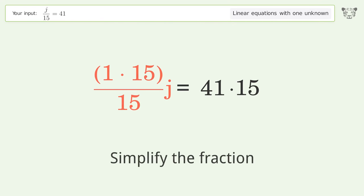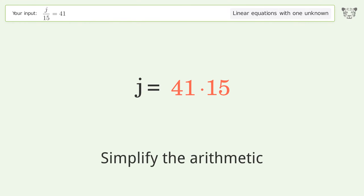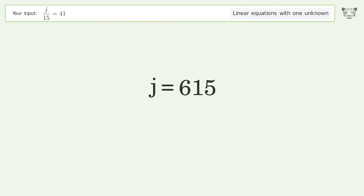Simplify the fraction, then simplify the arithmetic. And so the final result is j equals 615.